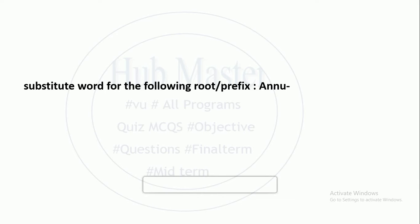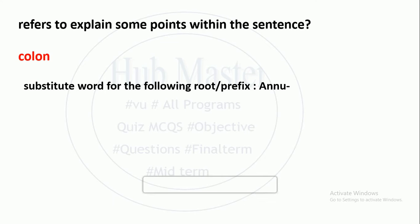The next question: substitute word for the following root prefix 'annual'. A colon is used to explain some points within the sentence. For example, if I write a report heading for discussion, I write a colon sign, then write a paragraph or sentence. The colon explains some points within the sentence.